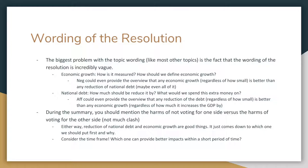NEG could always provide the overview that economic growth, regardless of how small it is, is on net better than any reduction of the national debt. So essentially, even if you're increasing the overall GDP of the United States by 0.0001%, that's still better than eliminating all of the national debt. That argument works well as long as you can prove it with your case.